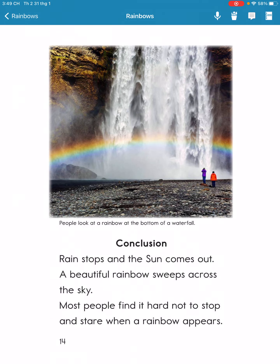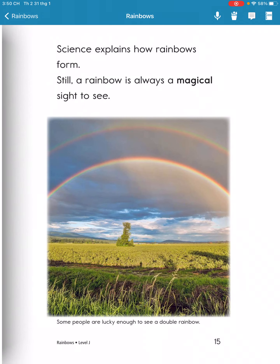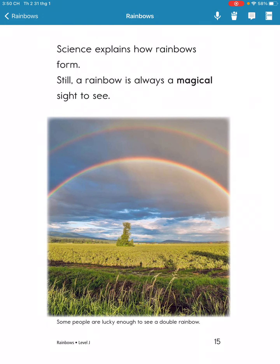When the rain stops and the sun comes out, a beautiful rainbow stretches across the sky. Most people find it hard to stop and stare when a rainbow appears. Even though scientists can explain how rainbows form, a rainbow is still a magical sight to see.